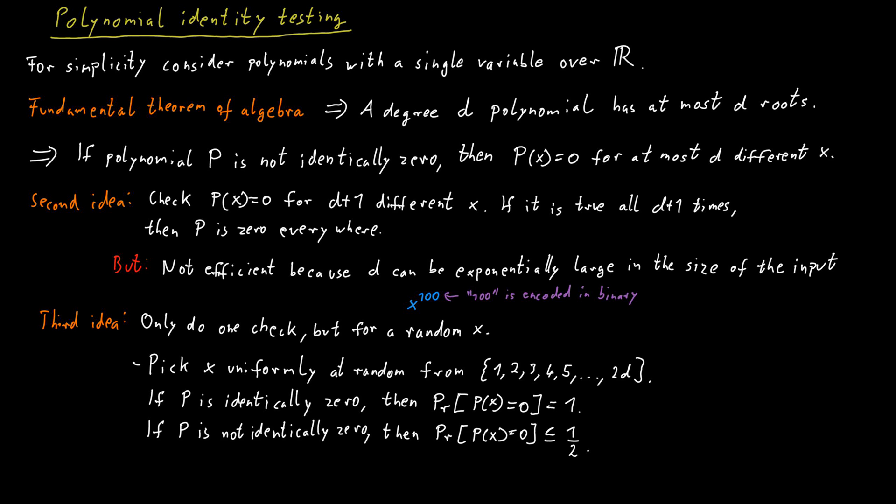So at most half of them will make the polynomial to be not equal to 0. And therefore, the probability that we happen to pick a value that makes it 0 can be at most a half.